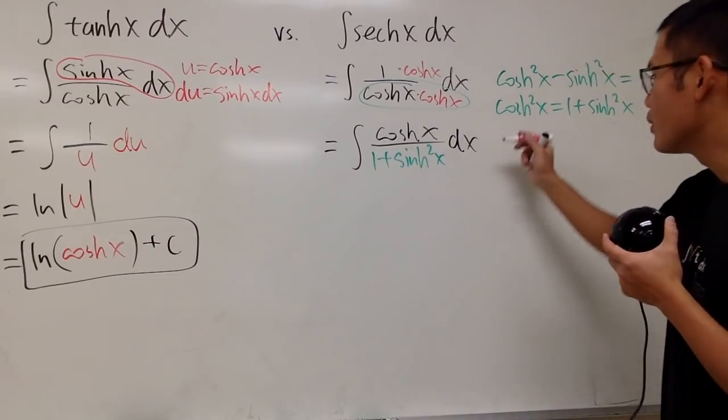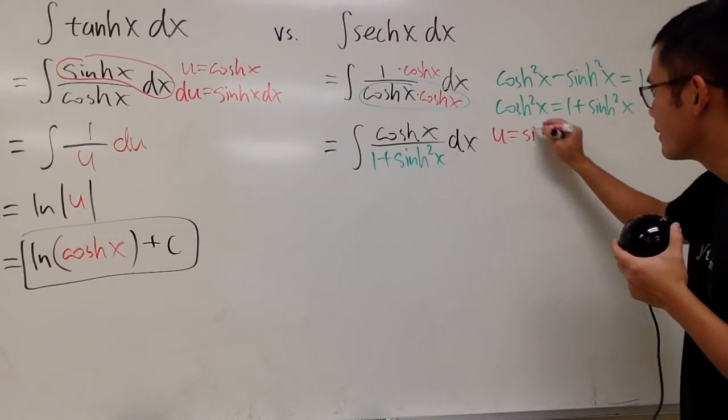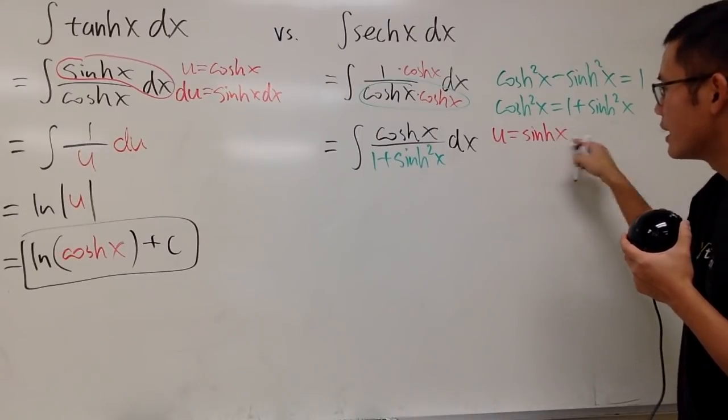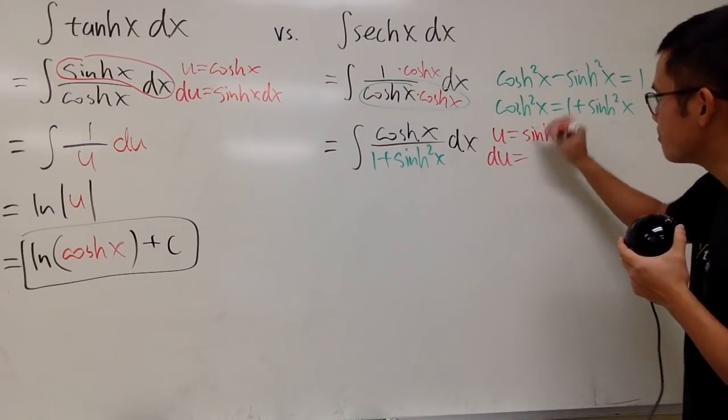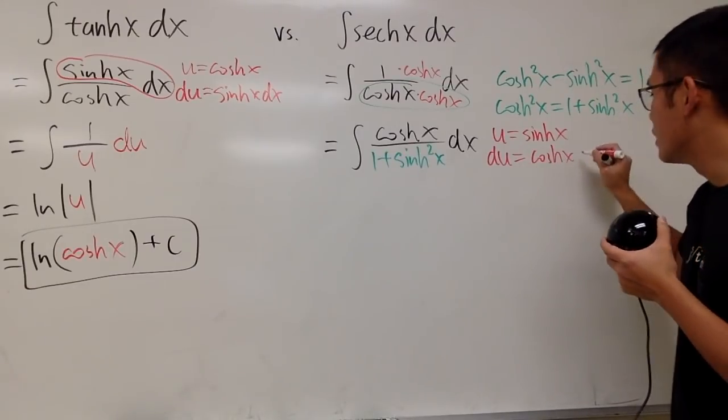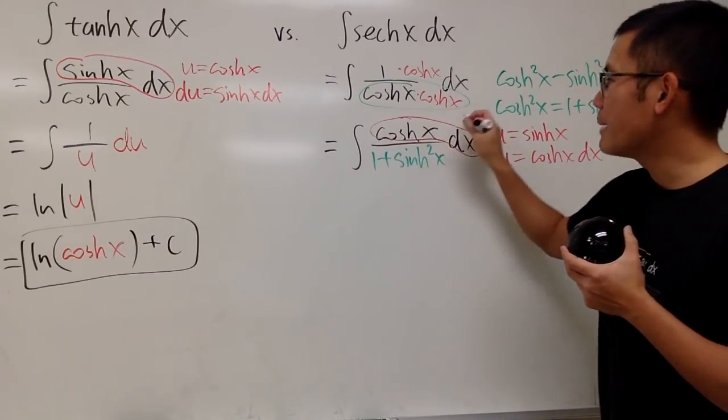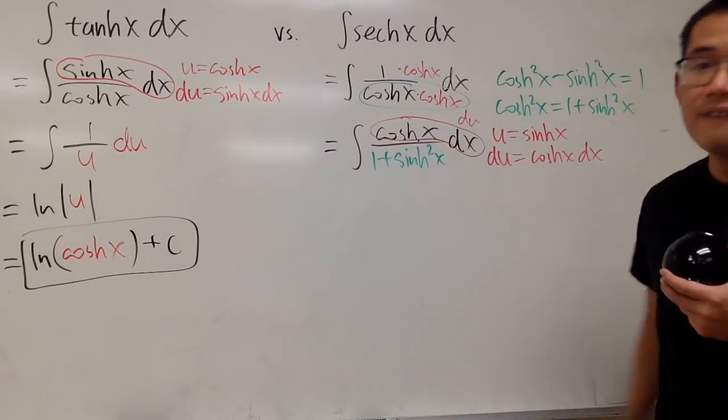Then, of course, you can do u-substitution. I'm going to let u equal sinh x. The reason is because when I differentiate this, I will get positive cosh x. This is exactly what we have on the top. That's the du right here. Very nice.